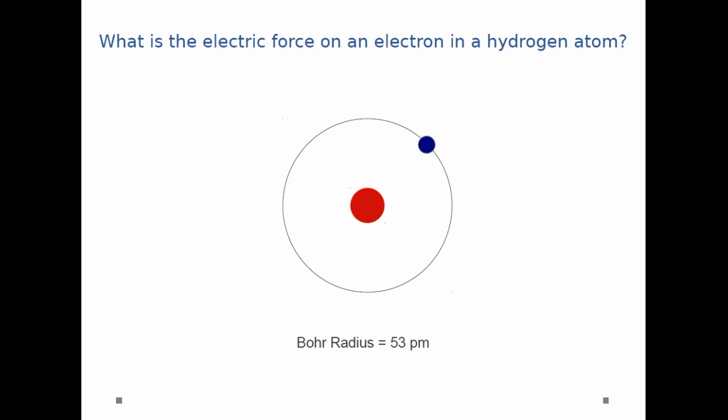In the diagram, I give you a hydrogen atom. The red circle represents the proton in the nucleus. The blue circle represents the electron that orbits around the nucleus. And I ask you, what is the electric force on an electron in a hydrogen atom?